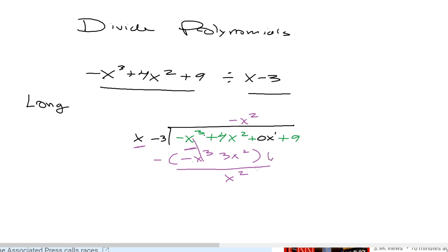Next, we drop this 0x term. And again, do the same thing all over again. How many times can x divide x squared? And the answer is 1x times. So x times negative 3 is negative 3x. x times x is x squared.